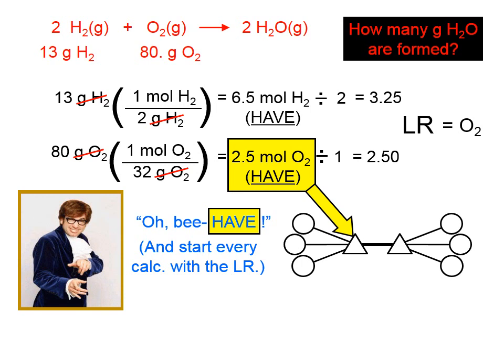On our stoichiometry island diagram, moles of oxygen is this island right here. And we need to calculate grams of water. Our island diagram mental model boils down to starting with 2.5 moles of oxygen and using two conversion factors. You see here with Austin Powers, it says O-behave and start every calculation with the limiting reactant. Is there anything wrong with starting with 80 grams of oxygen? Because we did say that oxygen is the limiting reactant. And the answer is, no. There's no reason why you couldn't do that.